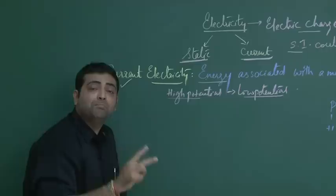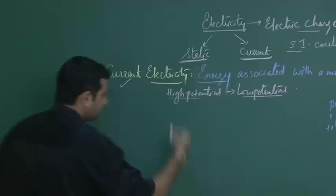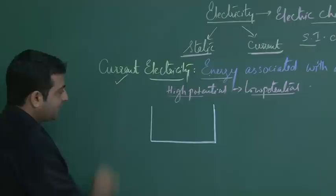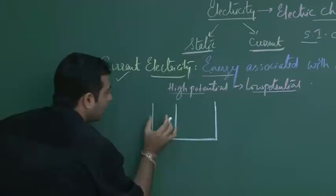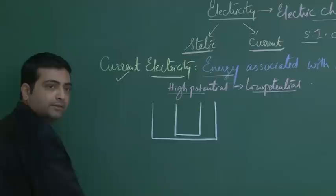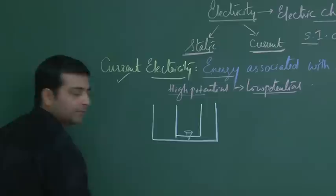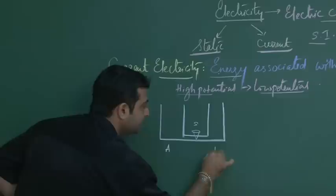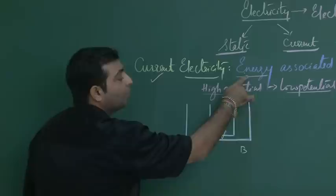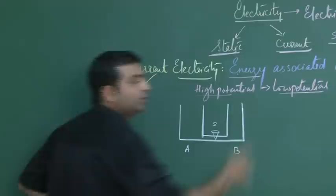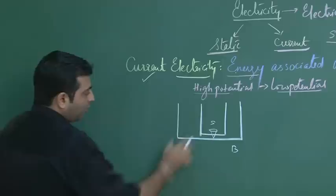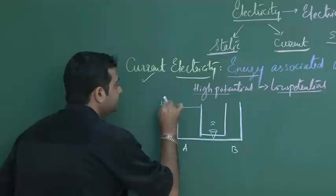To understand current electricity, we'll look at two simple illustrations to understand the flow of energy. Suppose I happen to take a water tank. I'll consider it in two ways: one having a broader width and one having a narrow width. These two beakers are connected by a side tube having a stopcock in between — S stands for the stopcock. I have cylinder A and cylinder B. Let us consider cylinder A has water at a higher level.